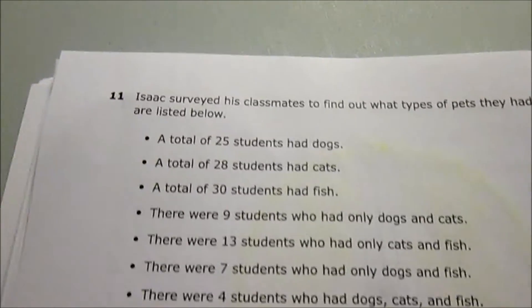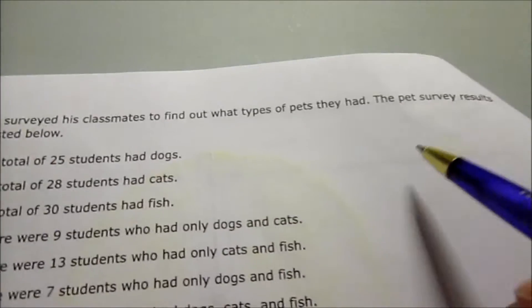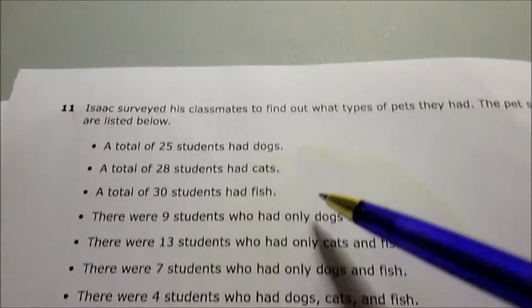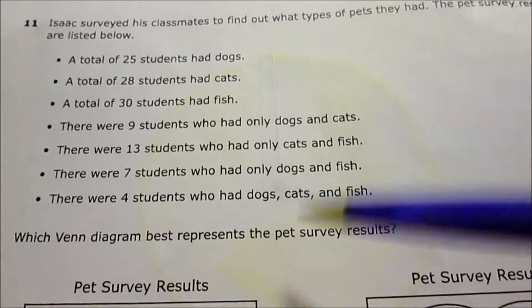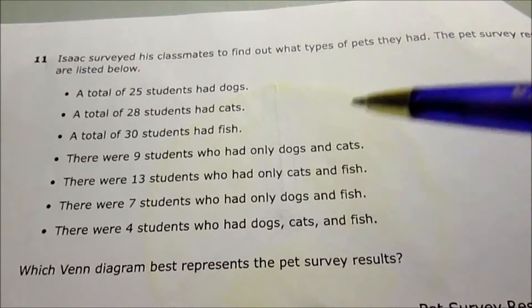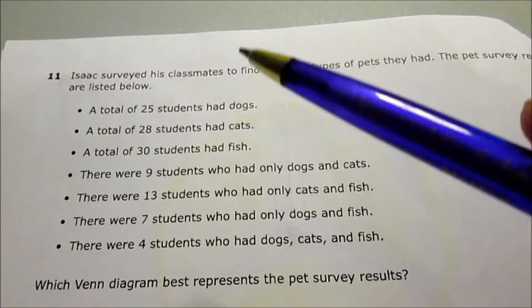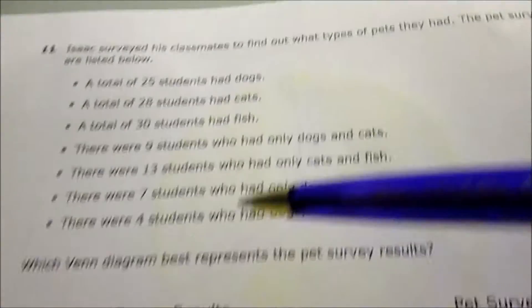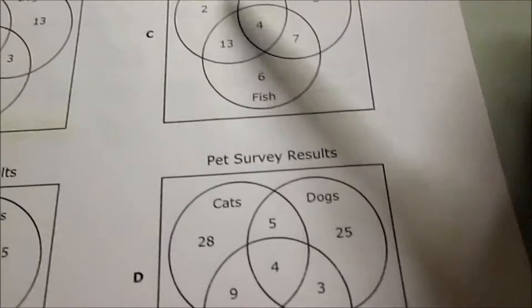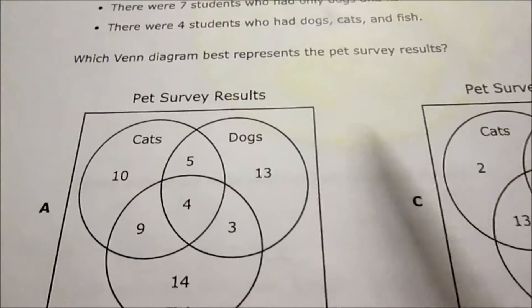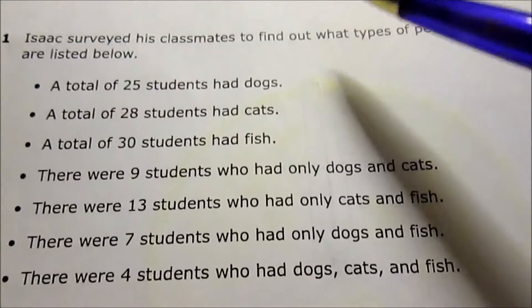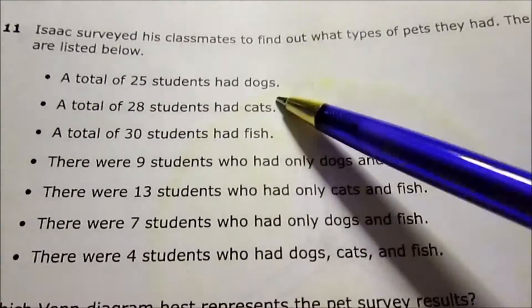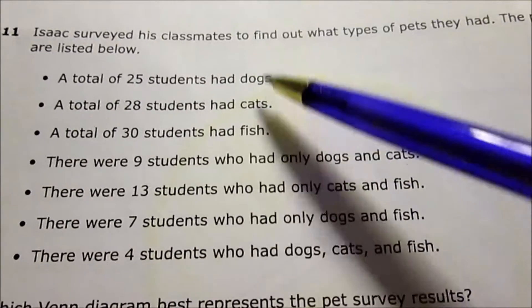Question 11: Isaac surveyed his classmates. Here are the results. Which Venn diagram best supports the pet survey results? There's a lot of information and four Venn diagrams to pick from. It's just about going down the checklist of information, seeing which Venn diagram keeps up with this data accurately.